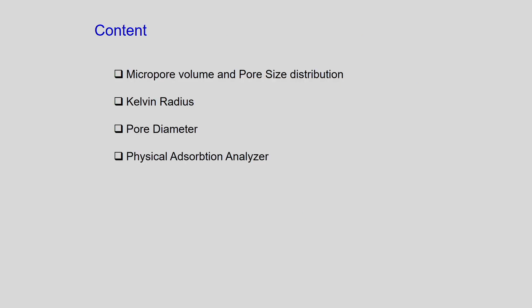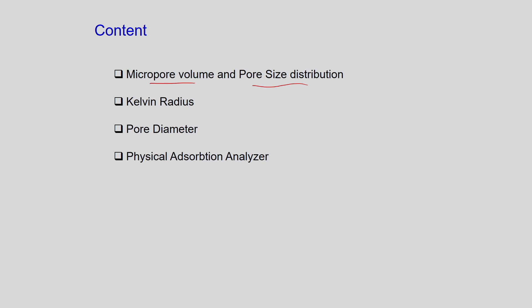In this lecture, we will cover the micropore volume and how the pore size distribution is obtained. We have studied the concepts in the last lecture — the t-plot, how you plot the volume adsorbed versus the thickness of the adsorbed layer. The thickness of the adsorbed layer can be obtained through the Halsey equation, and based on that we will see how to obtain the micropore volume and pore size distribution.